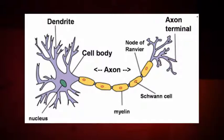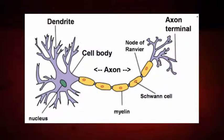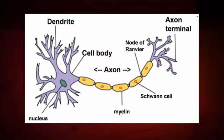Demyelination is the loss of the myelin sheath and is the hallmark of some neurodegenerative diseases such as multiple sclerosis. The exact etiology of MS is unknown, but a body of research supports the idea that it is an immunologically mediated disease.